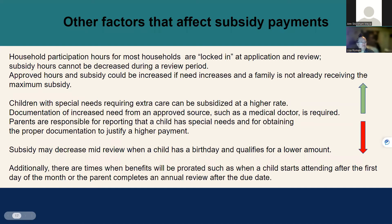Household participation hours are locked in at application and review. Subsidy hours cannot be decreased during the review period, but approved hours and subsidy could increase if need increases. Children with special needs requiring extra care in the child care setting can be subsidized at a higher rate. Documentation of increased need from an approved source such as a medical doctor is required at each application and review. Parents are responsible for reporting that a child has special needs and obtaining proper documentation to justify a higher payment.